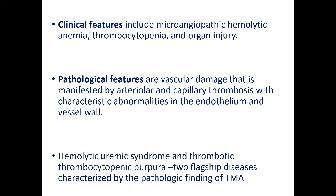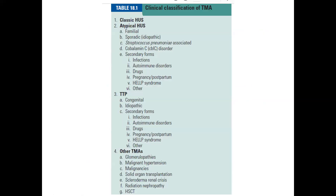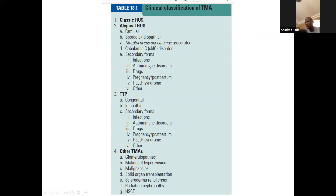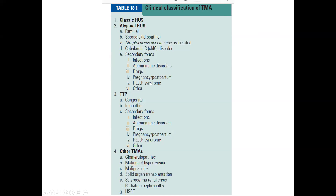Apart from these two flagship diseases, TMA can occur in a variety of clinical conditions, including other glomerular nephritis, accelerated hypertension, malignancies — particularly APML and other leukemias — solid organ transplantation, scleroderma renal crisis, radiation, and stem cell transplant. Secondary atypical cases are also seen in autoimmune disorders, drugs, pregnancy, HELLP syndrome, and others. TMA occurs across a variety of clinical conditions.